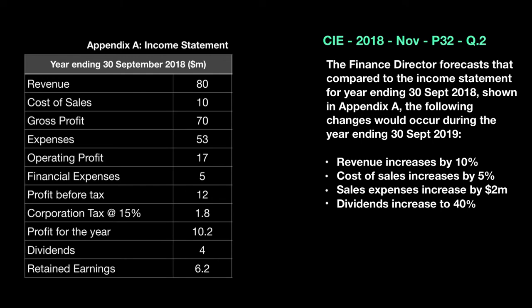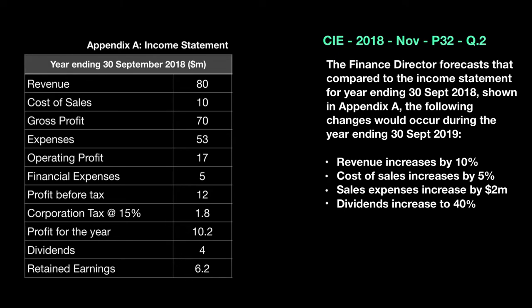This is a question that appeared in one of the CIE exams in 2018, November, paper 32, part of question number two. This question was associated with an entire case study, but we've taken out a little extract to solve it. The finance director forecasts that compared to the income statement for the year ending 30th September 2018 — shown in Appendix A — the following changes would occur during the year ending 30th September 2019.